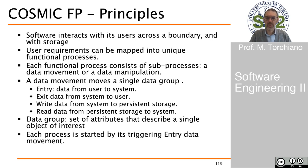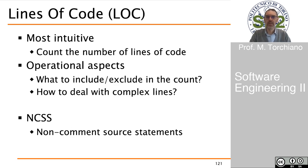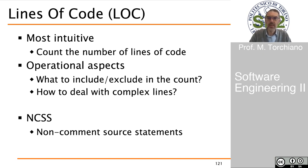Another way of measuring size is by measuring the size of a program. The most intuitive way is by counting the lines of code. It is very intuitive; the problem is that there are several possible alternatives. What do we include or exclude in the count? Are empty lines included or not? Whenever we have lines that are very complex — for instance, several instructions on a single line — do they count as a single line or as multiple lines?